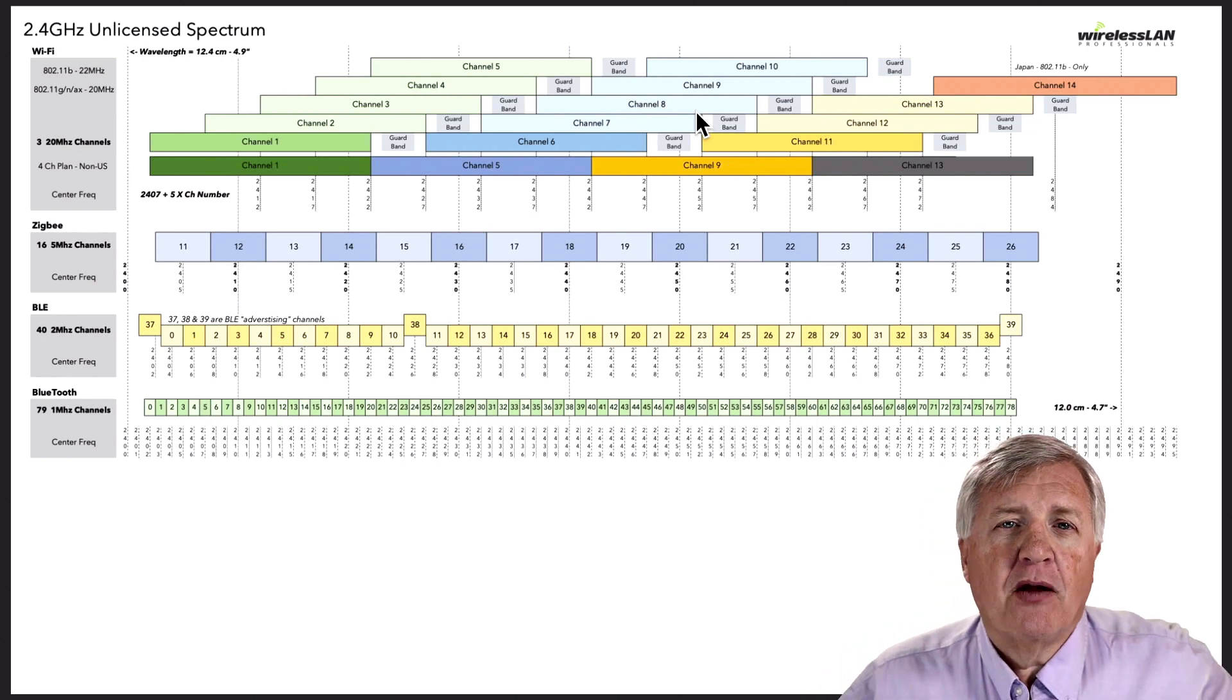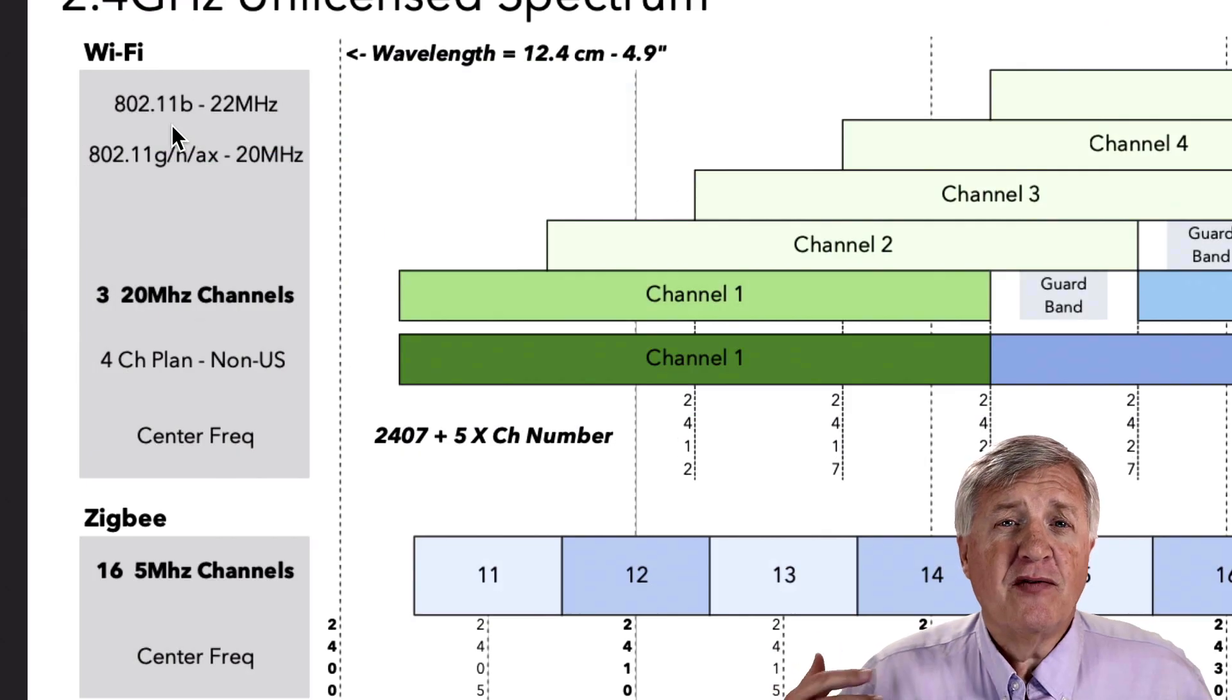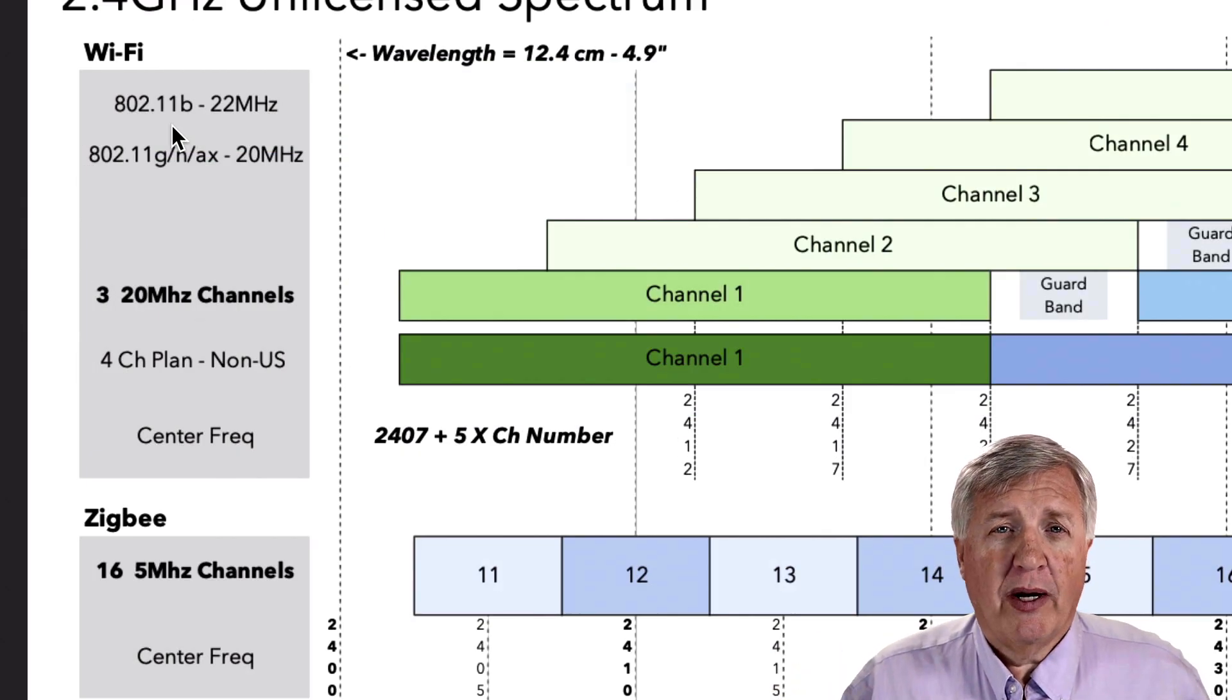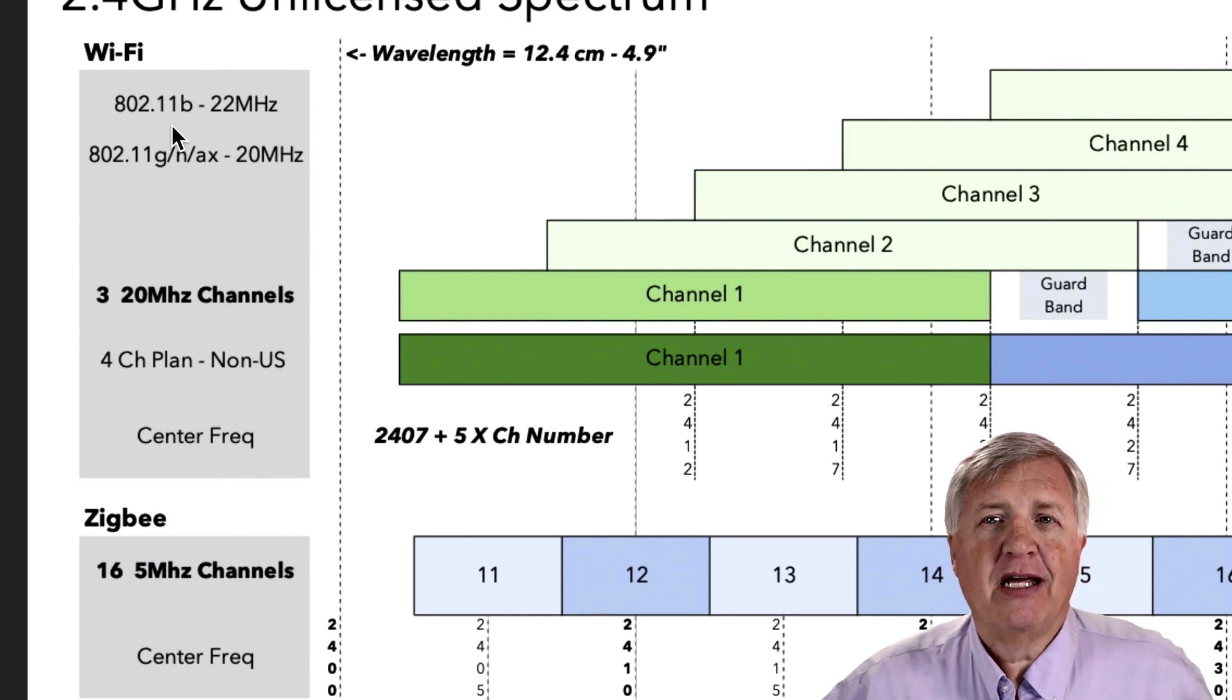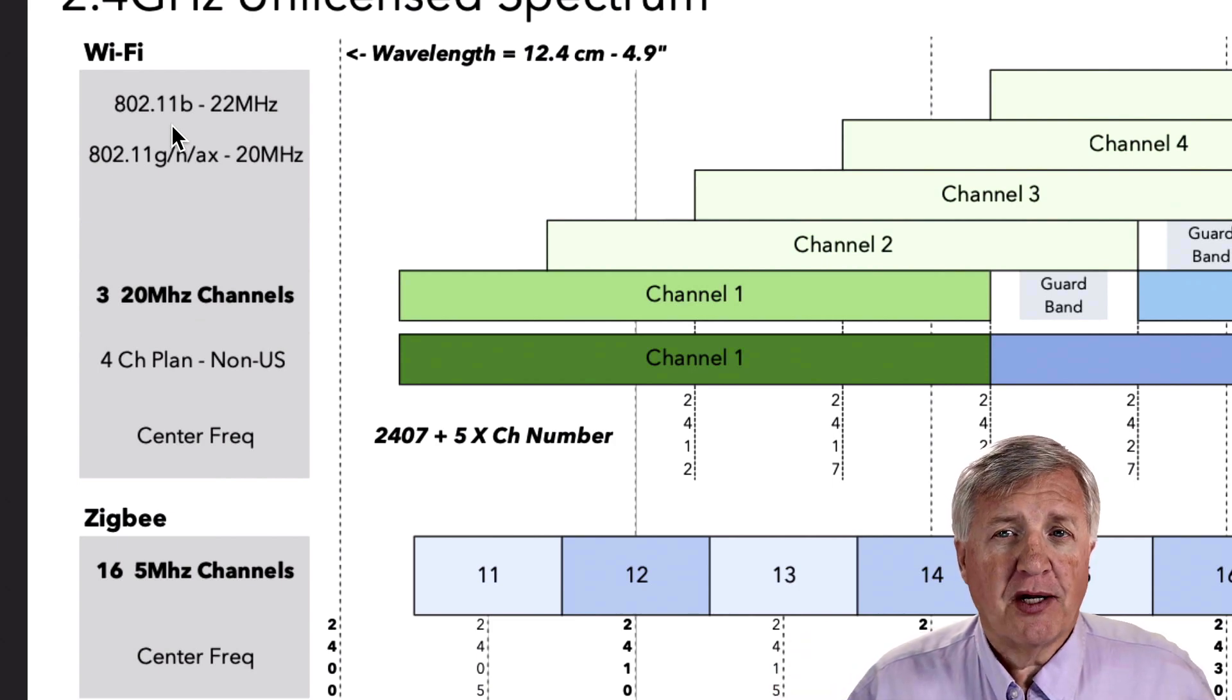I've broken this down through a couple of different ways that we can zoom in and see. In 802.11b, we use 22 megahertz wide channels. When we move to 802.11g and n and ax, there's no AC in 2.4 gig, we use only a 20 megahertz wide channel for OFDM.